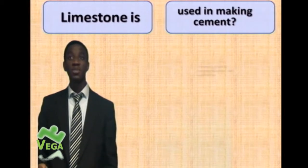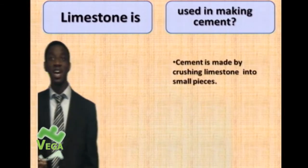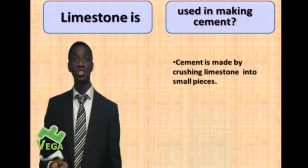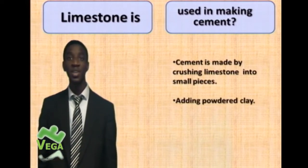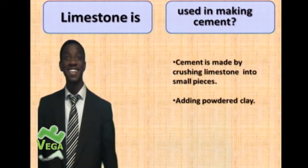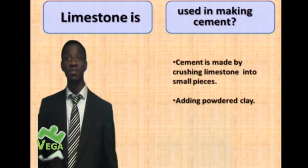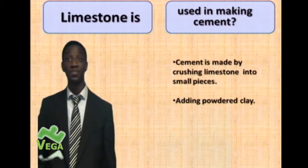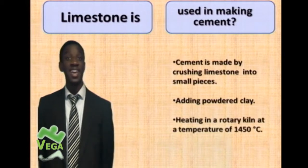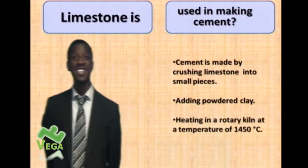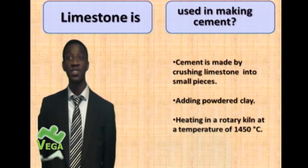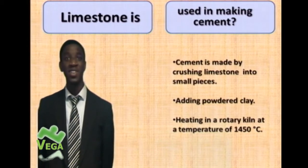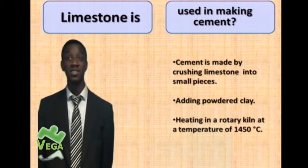When limestone is used in making cement, it is crushed into small pieces. Powdered clay is then added to the limestone. It's then heated in a rotary kiln at a temperature of 1450 degrees Celsius — well, that's hot. And that's how we make cement.